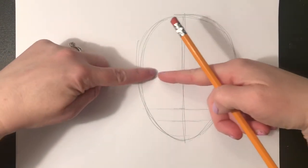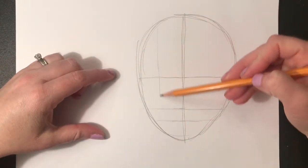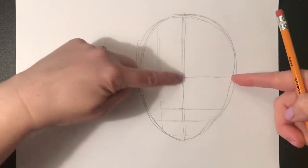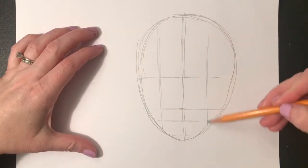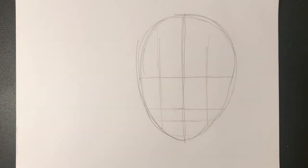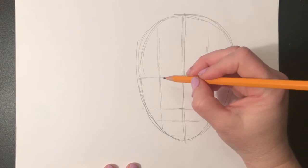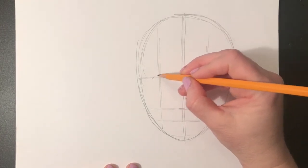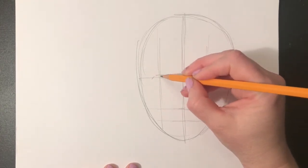To help put the eyes in the right place from side to side, I'm measuring about halfway between my midline and the side of the head, and this vertical line is gonna show me about where the eyes will be. Of course, all of this changes if the head is not directly facing you, but we're gonna start with a picture of a person who's just facing straight forward.